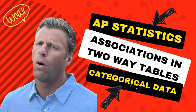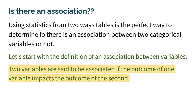Welcome to AEP Statistics. In this video we're going to cover associations that are seen in two-way tables with categorical data. Before we dive into actually looking at some two-way tables, we should probably talk about what is an association. So if you have two categorical variables, you might wonder: is there an association between them? Using statistics from two-way tables is the perfect way to determine if there is an association between two categorical variables or not.